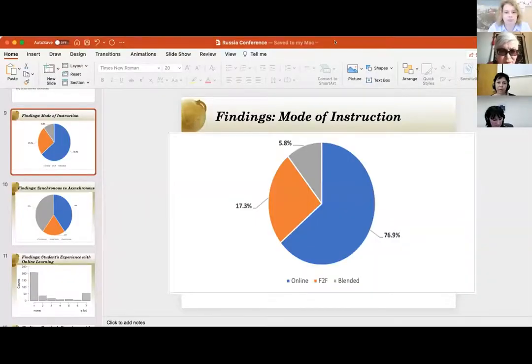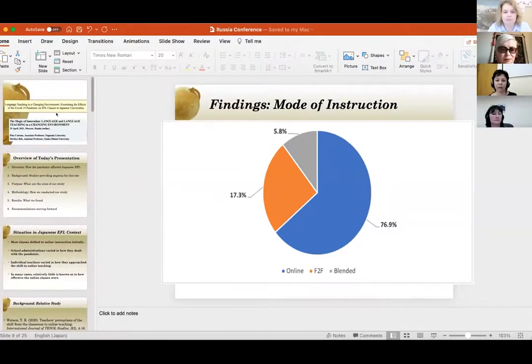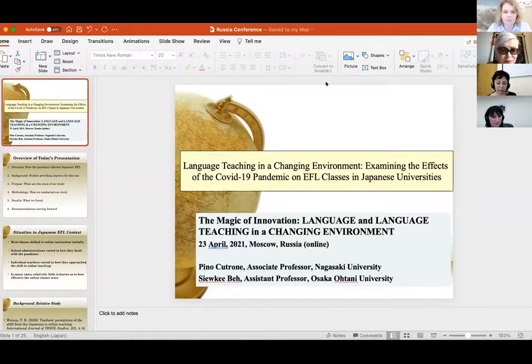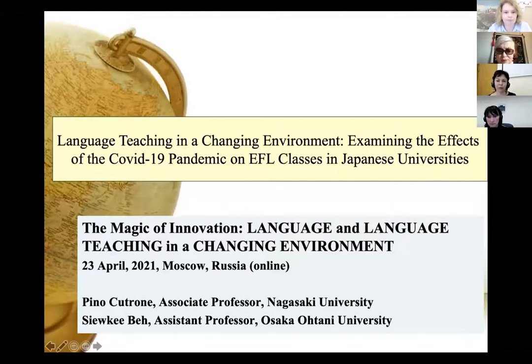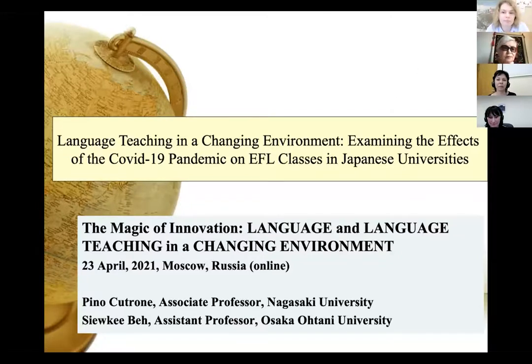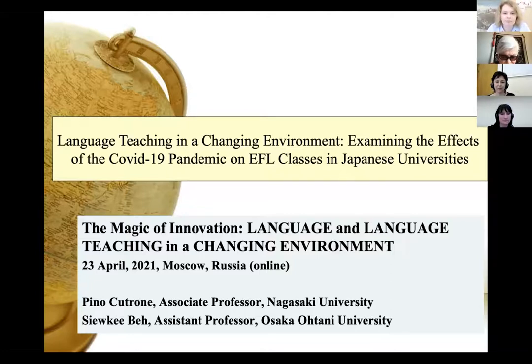Now I would like to move on to our reports from abroad and give the floor to Pino Catrioni and Tsuyuki Bey from Nagasaki University in Japan. The report is called 'Language Teaching in a Changing Environment: Examining the Effects of the COVID-19 Pandemic on EFL Classes in Japanese Universities.' This is a precious opportunity to find out how our international colleagues from abroad dealt with this pandemic, as it was in itself a transnational disaster.